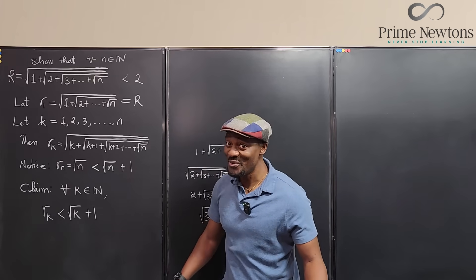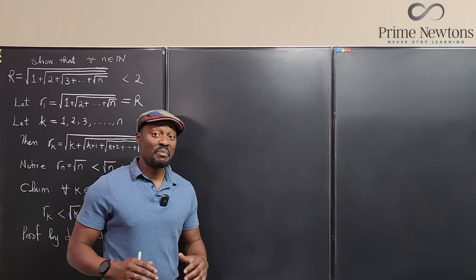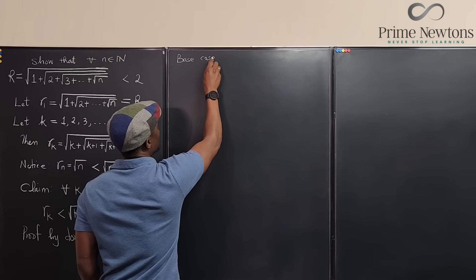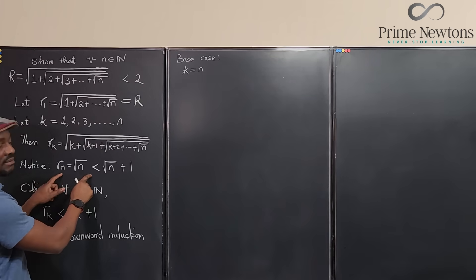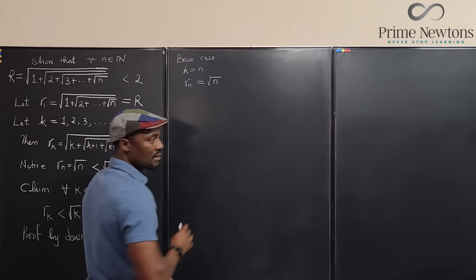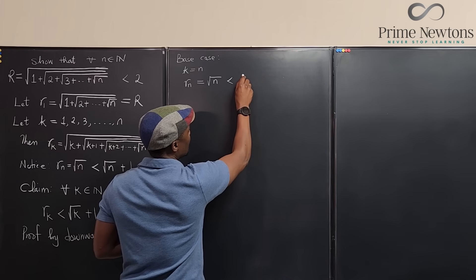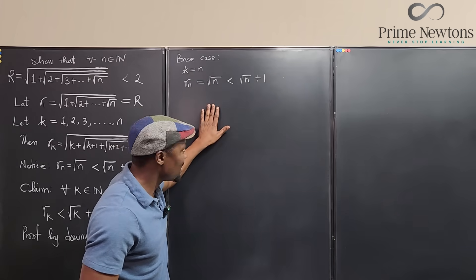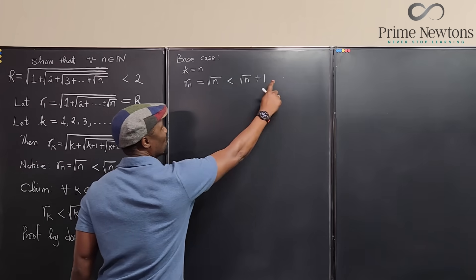Proof by induction. The base case is k equals n. We have r sub n equals the square root of n, and clearly the square root of n is less than the square root of n+1. This is always true — anything is less than itself plus one. Base case: check.